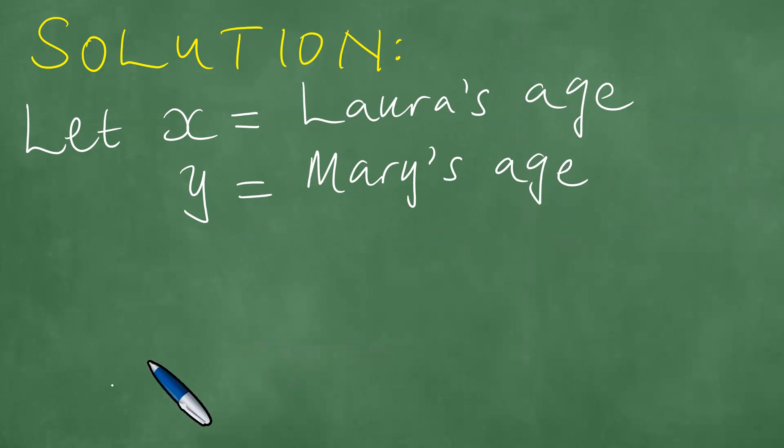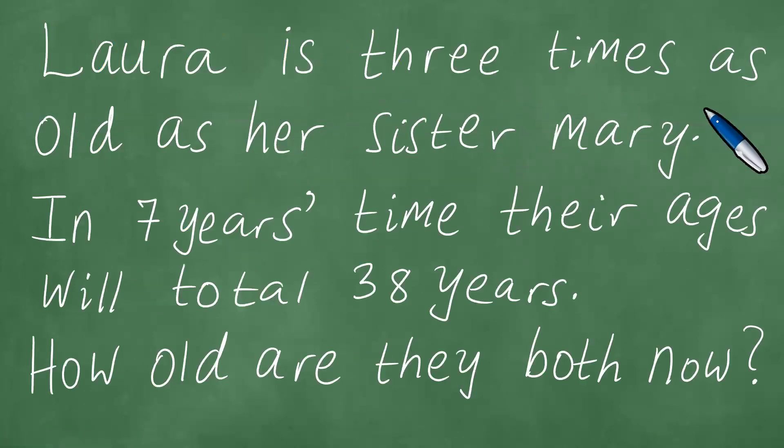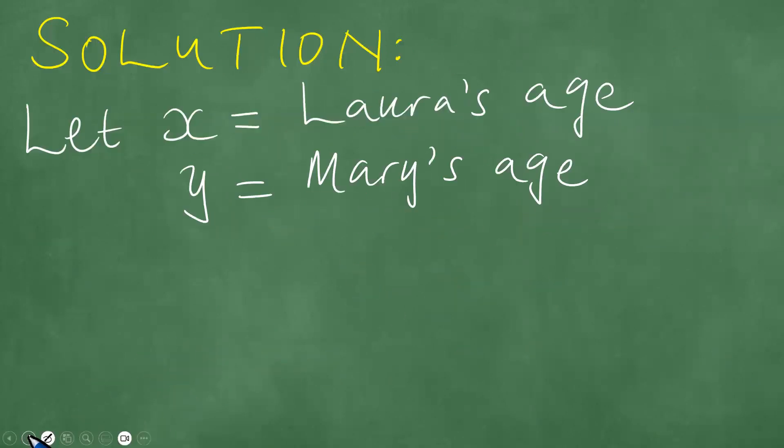And then now we are told in this part of the problem that Laura is three times as old as Mary, so we have Laura and then we have Mary. But if Laura is already three times as old as Mary, it therefore means that we gonna have to multiply Mary's age by three and equate the two, like so.